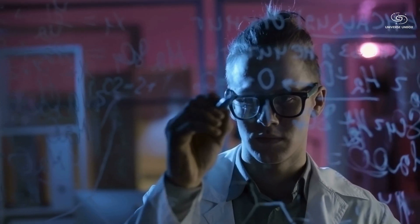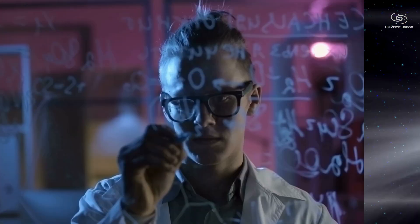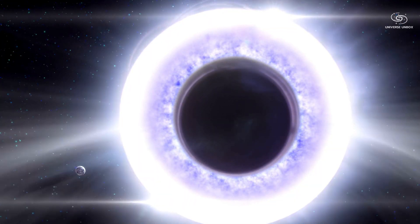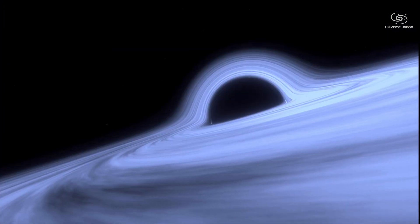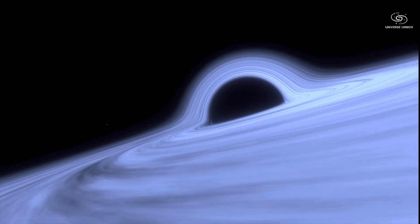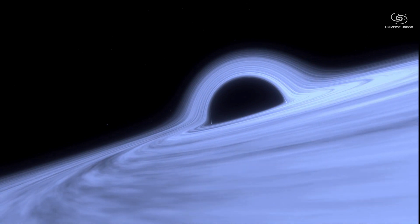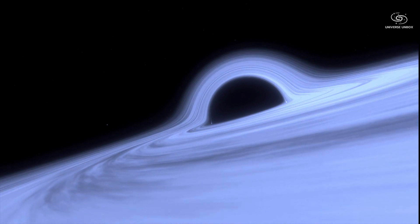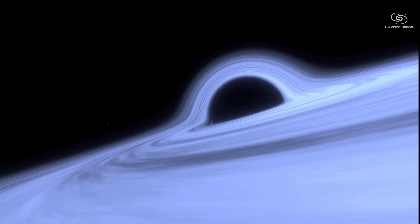Some scientists speculate that white holes also exist. In theory, they should be created alongside black holes. Apart from color, they are entirely opposite to black holes. Nothing can get close to a white hole. Currently, there is no data on such objects, but the general theory suggests their existence.